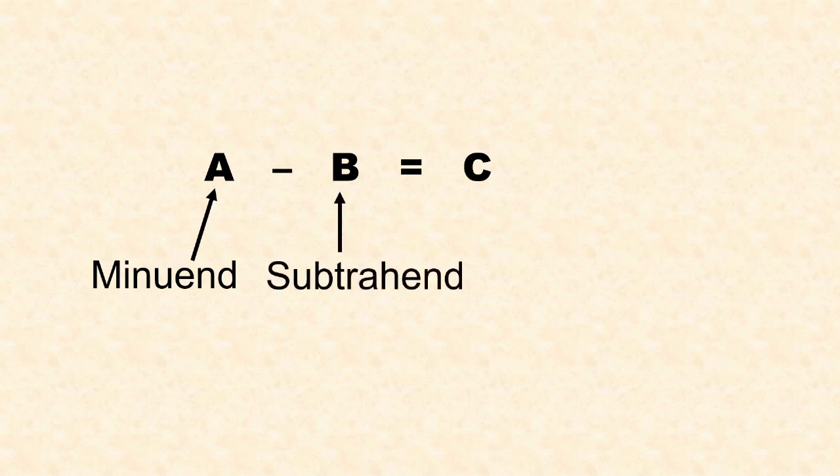And then this is our subtrahend. This is the value that will be taken away from the minuend. And the result, the answer, we call it the difference of the subtraction operation.